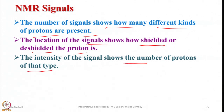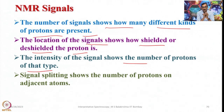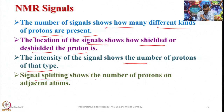One is the different types of signals and where they are appearing, then how many protons are there in each signal, and then the signal splitting — the splitting pattern — whether two lines, three lines, four lines, or one line is there. This signal splitting shows the number of protons on adjacent atoms, that is, how they are connected.